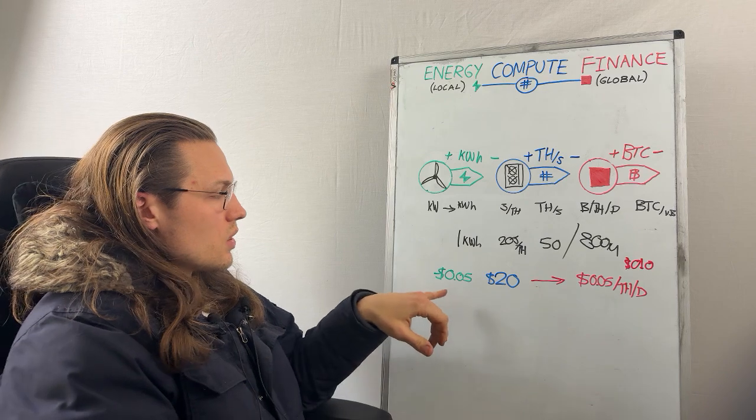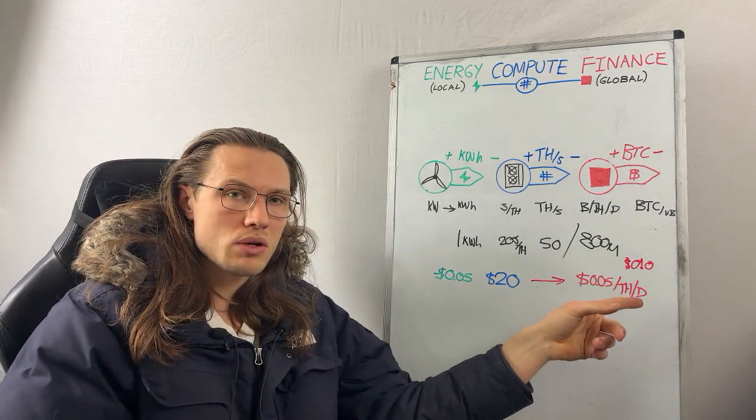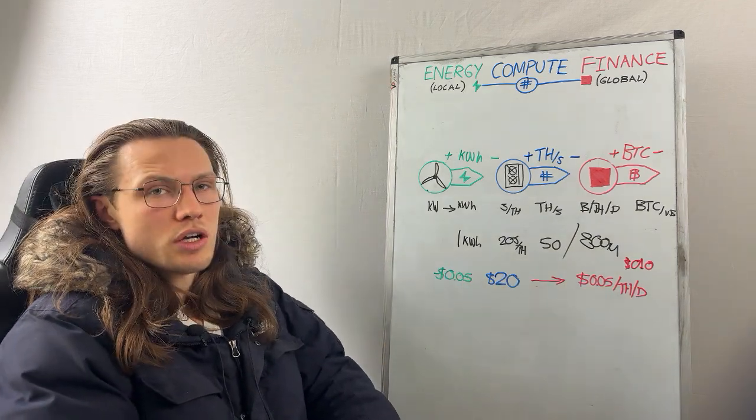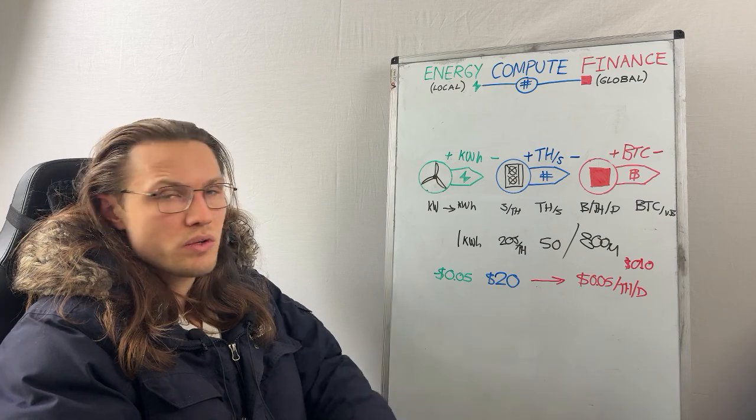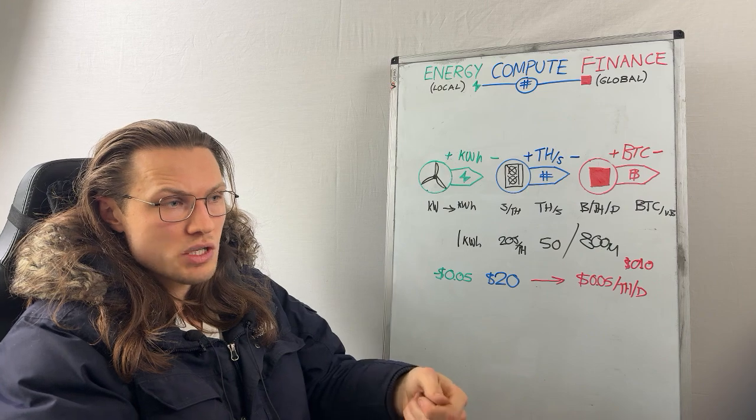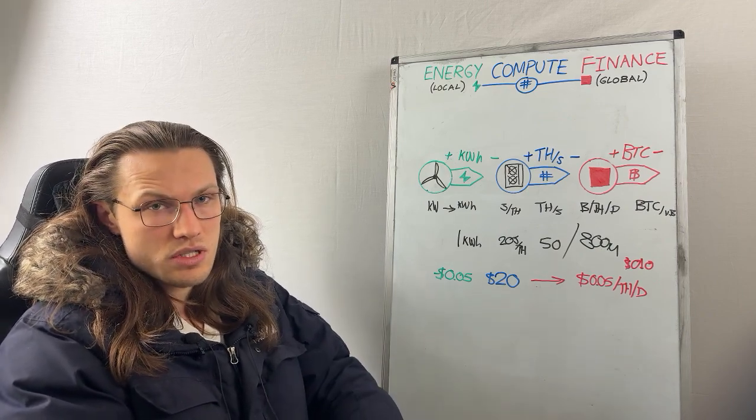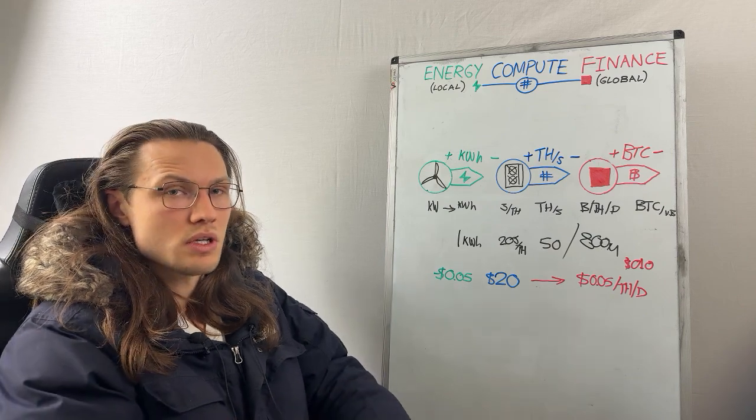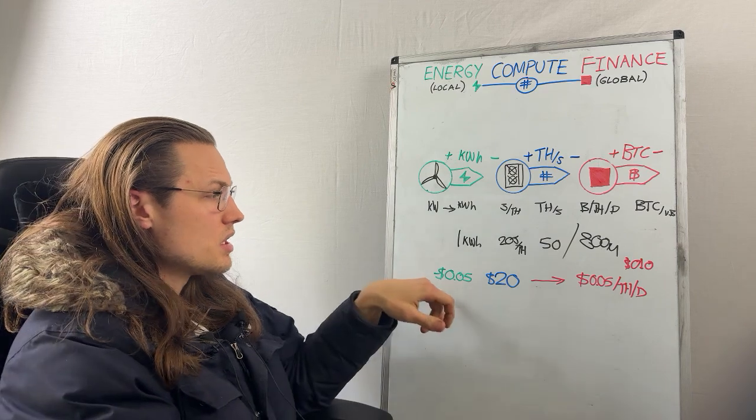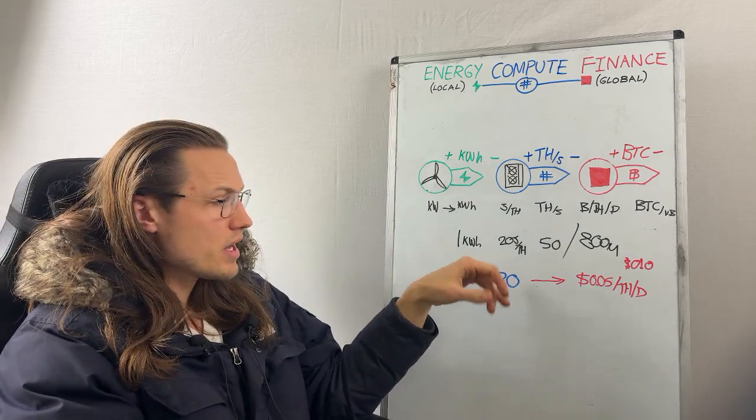And so, essentially, $1 of electrical bill is generating you $2 of Bitcoin. So, if you divide that, that's half. So, you've got a production cost of, say, Bitcoin's $80,000, and the production cost you have is $1 of energy makes you $2 of Bitcoin. Well, it means that $40,000 of electricity will make you an $80,000 Bitcoin. So, your production cost in this example is $40,000 of energy to produce a Bitcoin. But you've also got the cost of the machine, or per terahash, in this example.